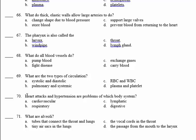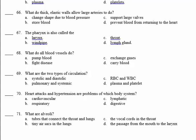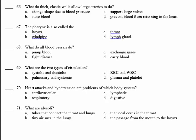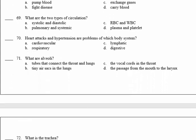Number 70: heart attacks and hypertension are problems of the cardiovascular system. Number 71: what are the alveoli? The alveoli are the air bags present at the end of each bronchiole, where the exchange of air happens. They are tiny air sacs in the lungs.